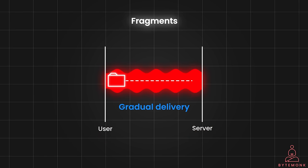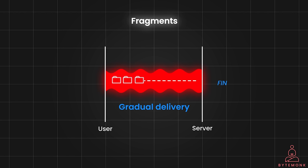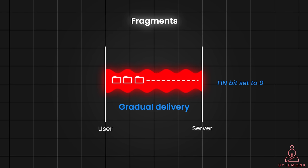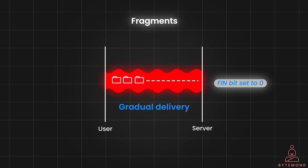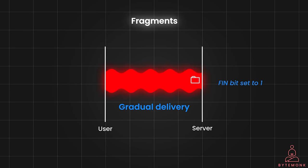Fragmentation allows for gradual delivery of large messages — the receiver can start processing the initial fragments while the remaining fragments are still being transmitted. This is beneficial for applications where immediate display of partial data is valuable, such as receiving updates during a long-running process. When a message is split into fragments, each fragment is sent with the FIN bit set to 0 for all but the final frame. When the final fragment is sent, it is sent with the FIN bit set to 1, signaling to the receiver that this is the last frame in the message.